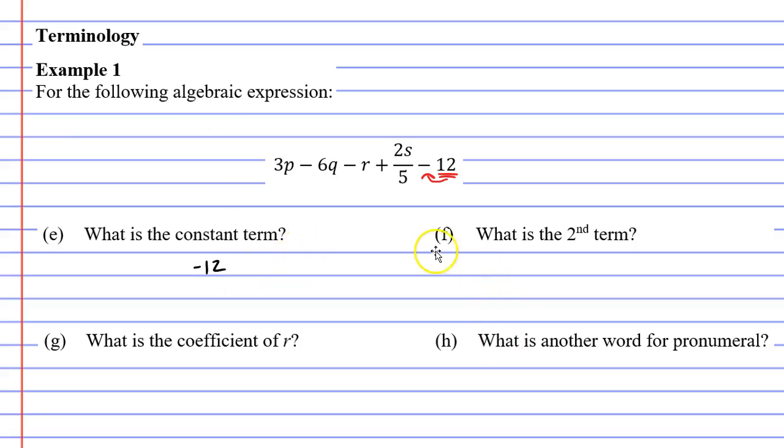Now moving on to question F, what is the second term? Our second term is 6q, remembering that we need to check for a minus sign. So it's actually negative 6q.